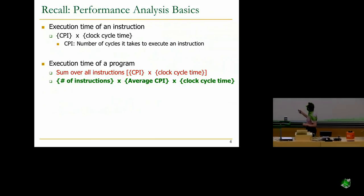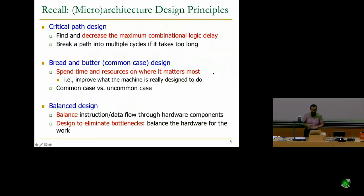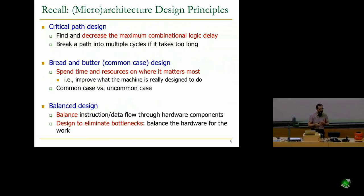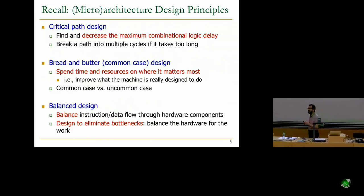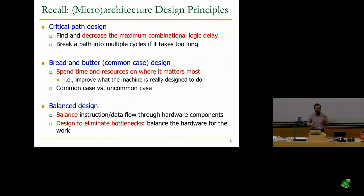You'll remember the iron law of performance: number of instructions times average CPI times clock cycle time. You hopefully recall the microarchitecture design principles we discussed — critical path design, common case design or Amdahl's law, and balanced design. We said that a multi-cycle machine satisfies these principles, whereas a single-cycle machine is not very good.